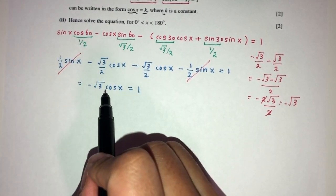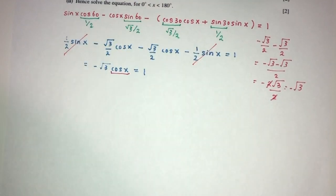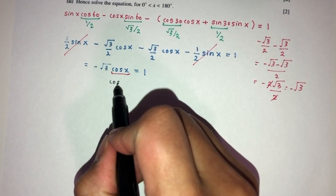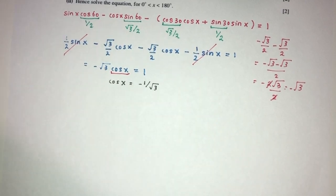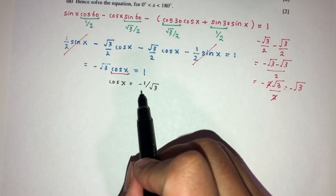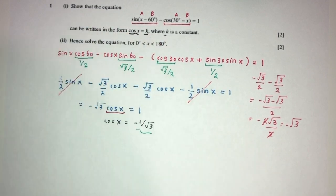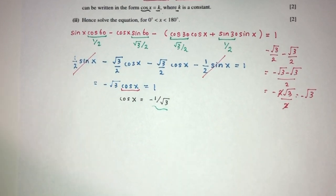Now we need to make cos x the subject. Dividing both sides by −√3, we get cos x = −1/√3. This is the value of k required for question part 1.